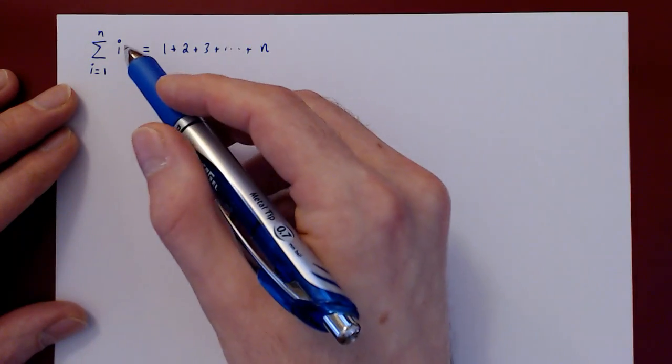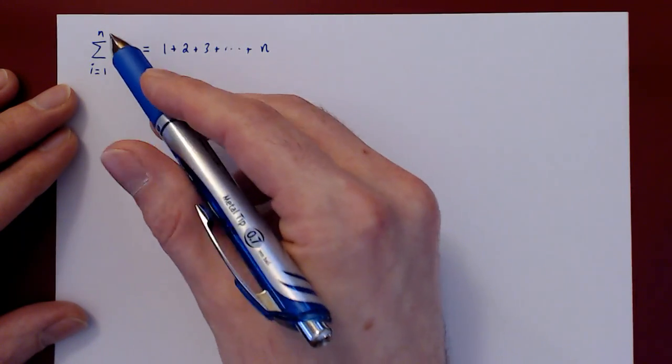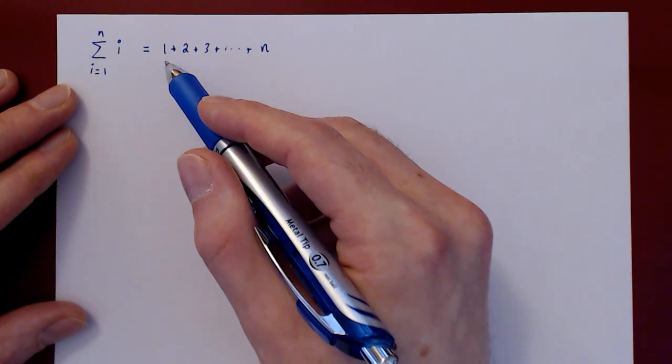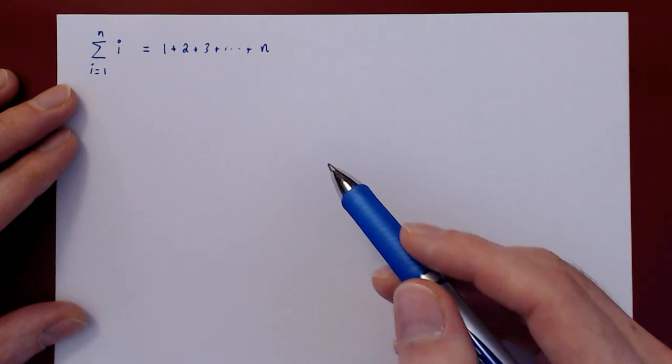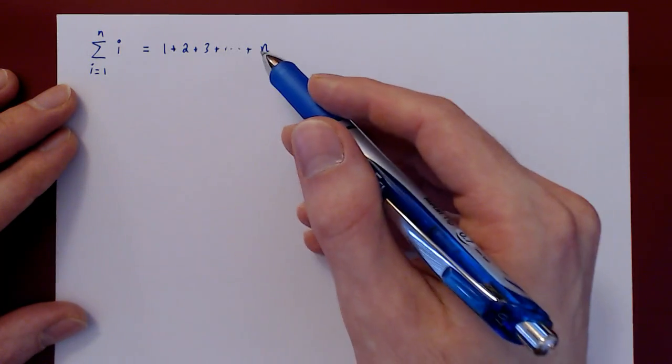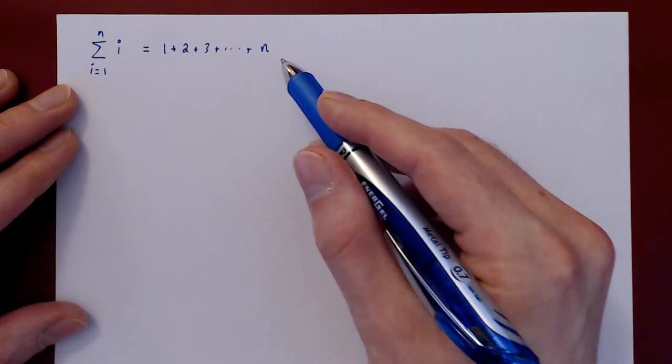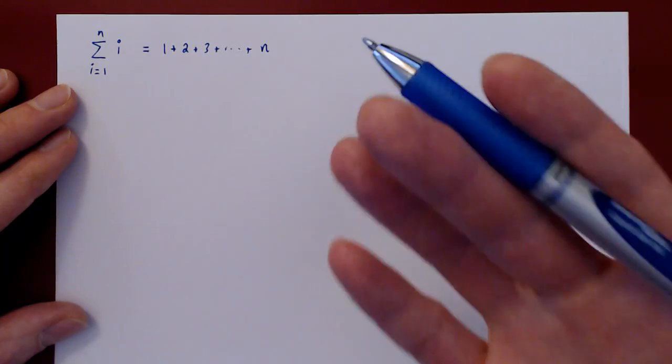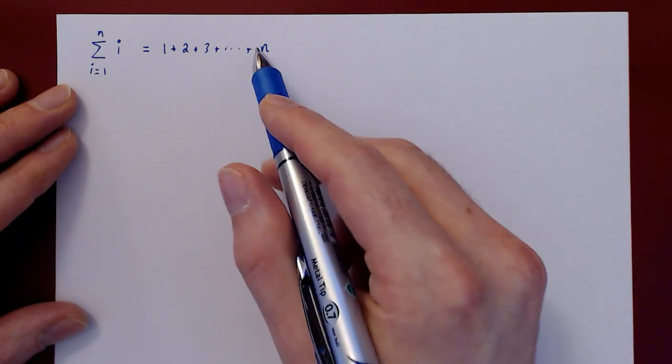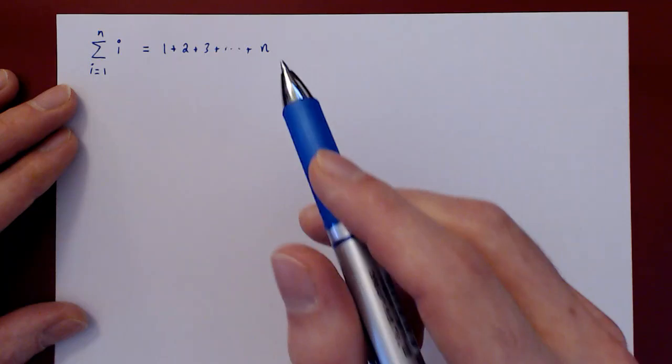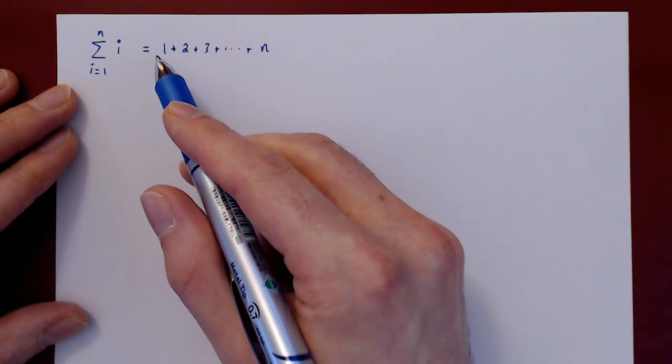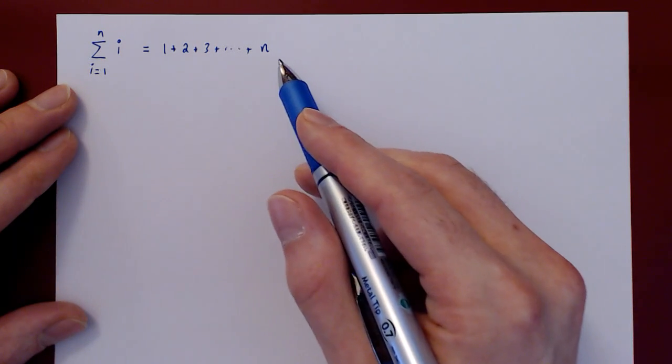So you can see the sum of i as i ranges from 1 to n is the sum of the first positive n integers. Now we have an interesting problem on our hands. We do not wish to look at this in expanded form. We want to find a shortcut, a formula, to evaluate the sum of n terms, the sum of the first positive n integers.